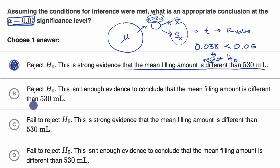Let's read the other ones just to make sure they don't make sense. This is rejecting the null hypothesis, but this isn't enough evidence to conclude that the mean filling amount is different than 530 milliliters. No, the first one is definitely much stronger. Fail to reject the null hypothesis. No, we are rejecting the null hypothesis because our p-value is lower than our significance level. We'd rule that one out as well.